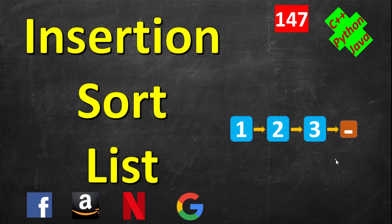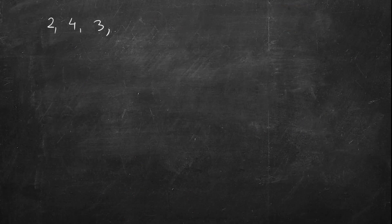In this video we will see how to do insertion sort on the elements in a singly linked list. Insertion sort is a very natural way of doing sorting. You have a number of cards, let's say 2, 4, 3, 1. The first one is already sorted, so you can think of them as cards having numbers and you have to arrange them in your hand.